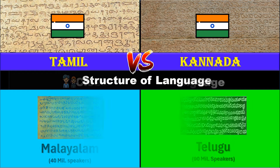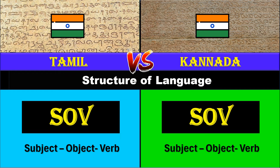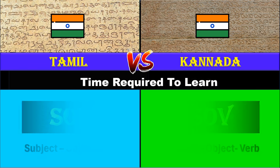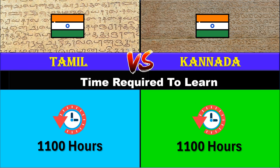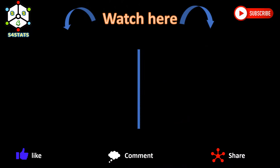Structure of language: both are SOB languages. Time required to learn: for both languages it's around 1100 hours. Thank you for watching. If you find the video useful, give this video a like and subscribe for more language comparisons. Also check out our other videos. Bye.